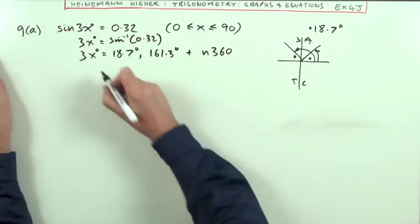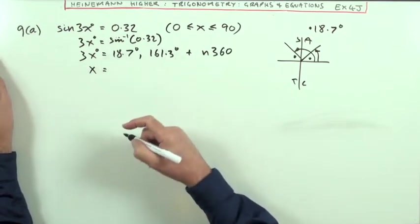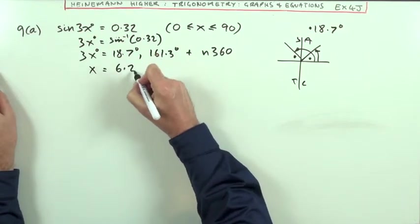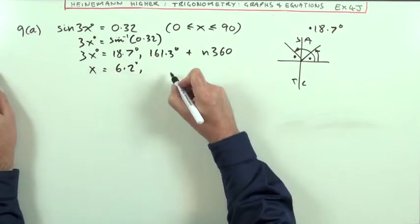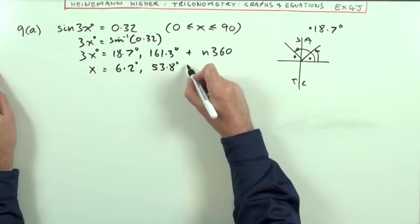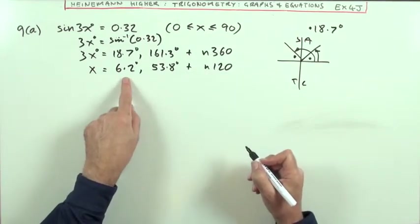So I'll add n360 should I require any more. For x itself, divide by three, so the first one's 6.2 degrees or 53.8 degrees, just rounding off, plus n120.